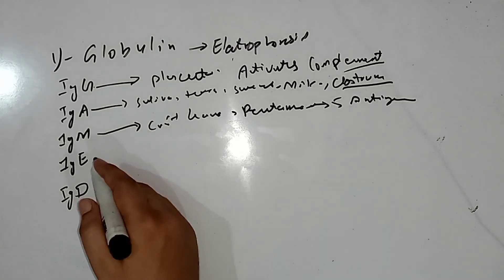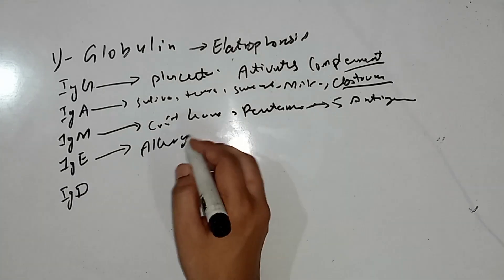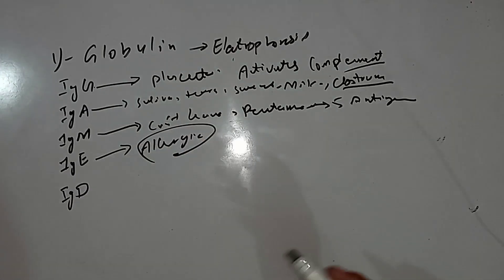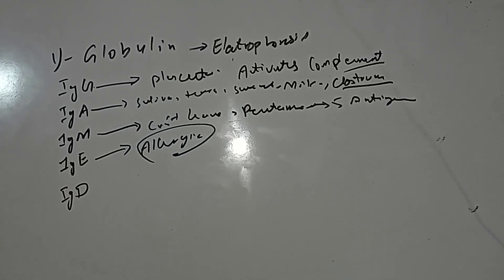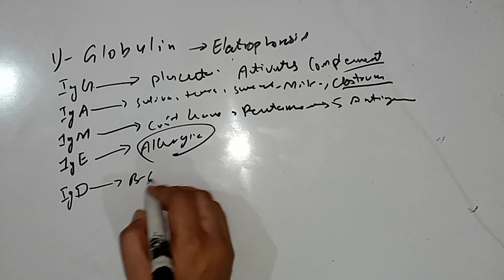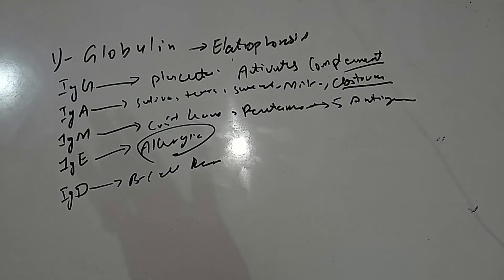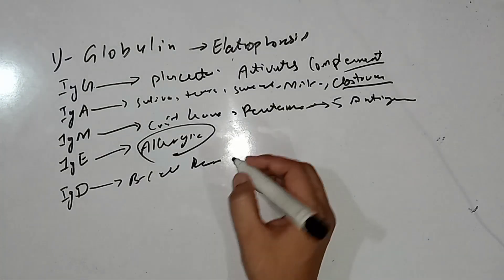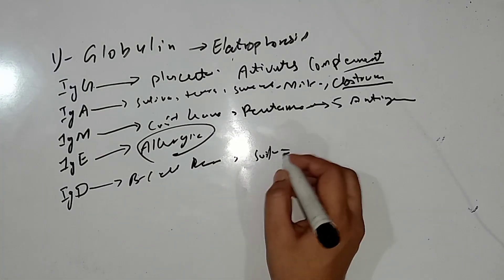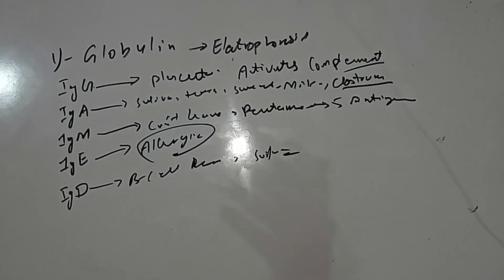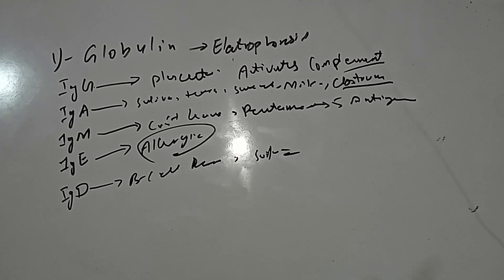IgE is present in allergic responses and is also active against parasitic infections. IgD acts as a B cell receptor; it is present in low concentrations in circulation and on the surface of B cells. IgD is also Y-shaped, though its precise function is not fully known.